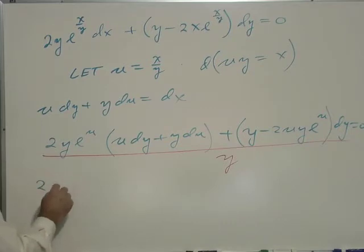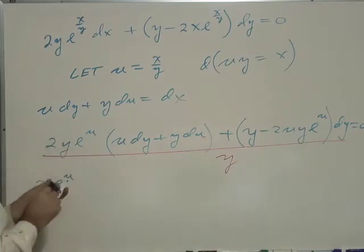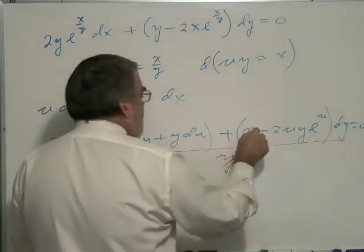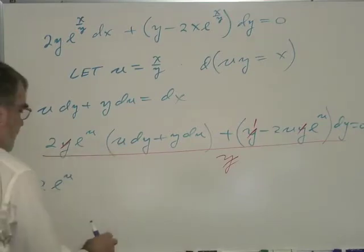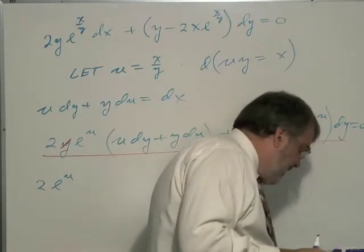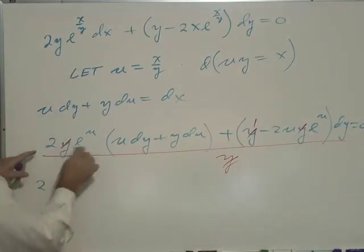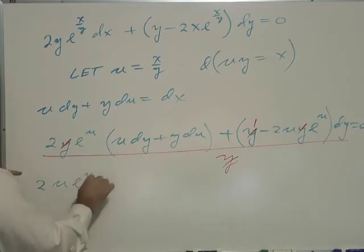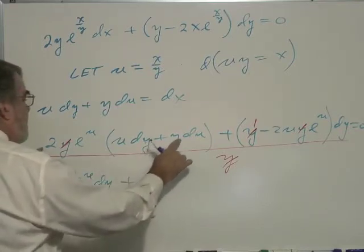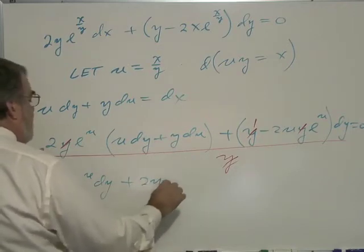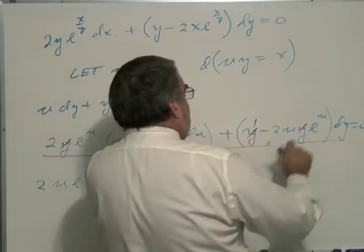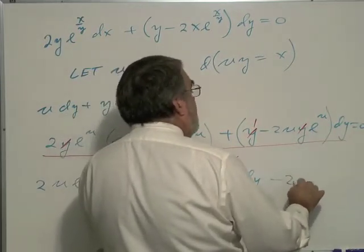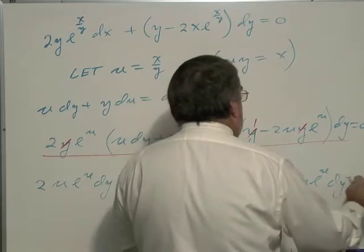So I'm going to divide everything by y, and that will do some canceling here. And so I have 2 e to the u, and I'm going to go ahead and, this y cancels out. Let me go ahead and show that cancellation. Let me go ahead and distribute through here. So I have 2 e to the u times u, so I'm going to rewrite that just a little differently here. So I have 2 u e to the u dy, plus 2y e to the u du, and then over here, plus, multiply this out, I've got dy, minus 2 u e to the u dy, equals to 0.